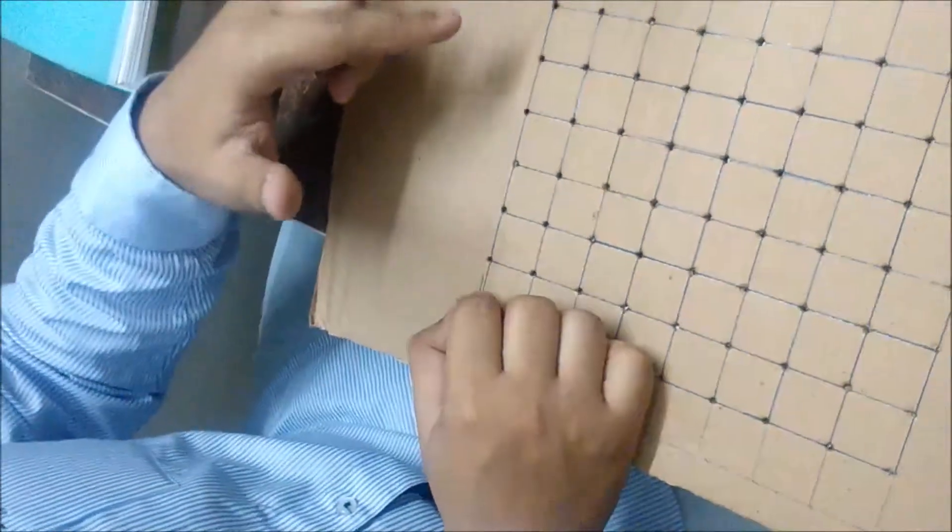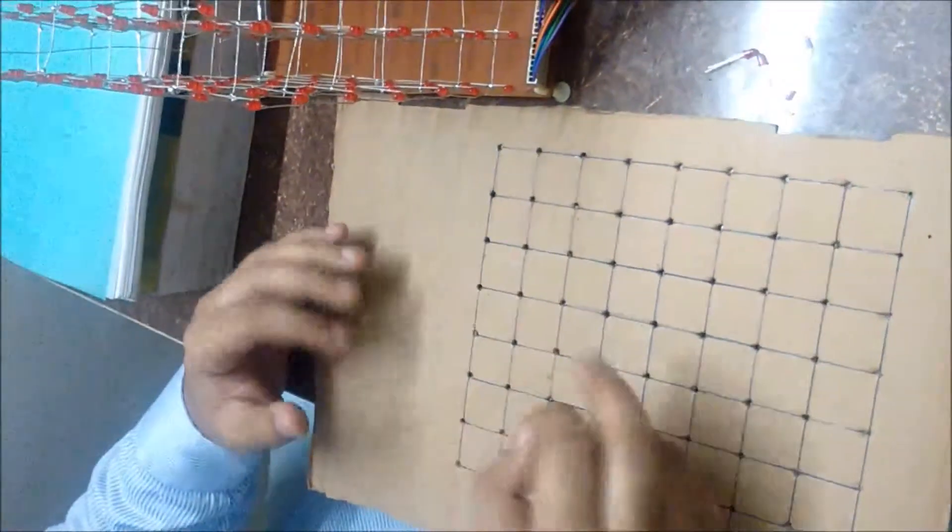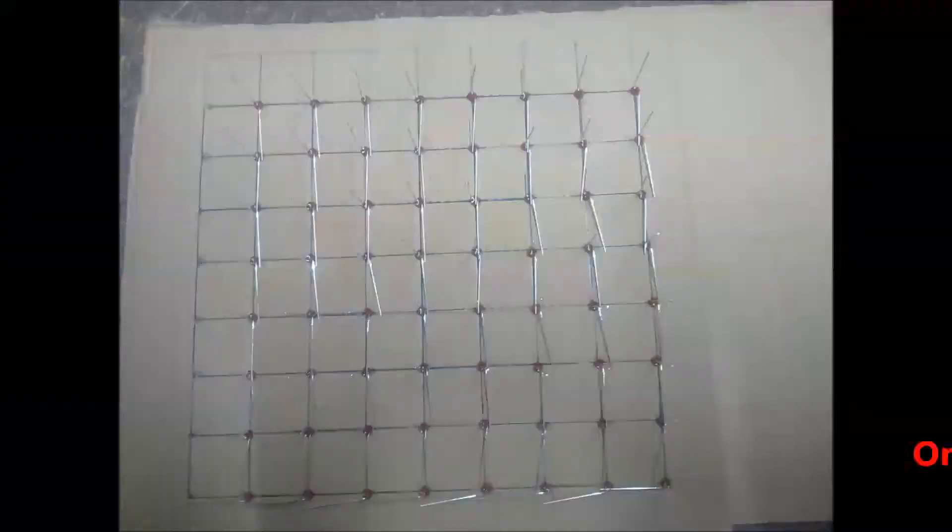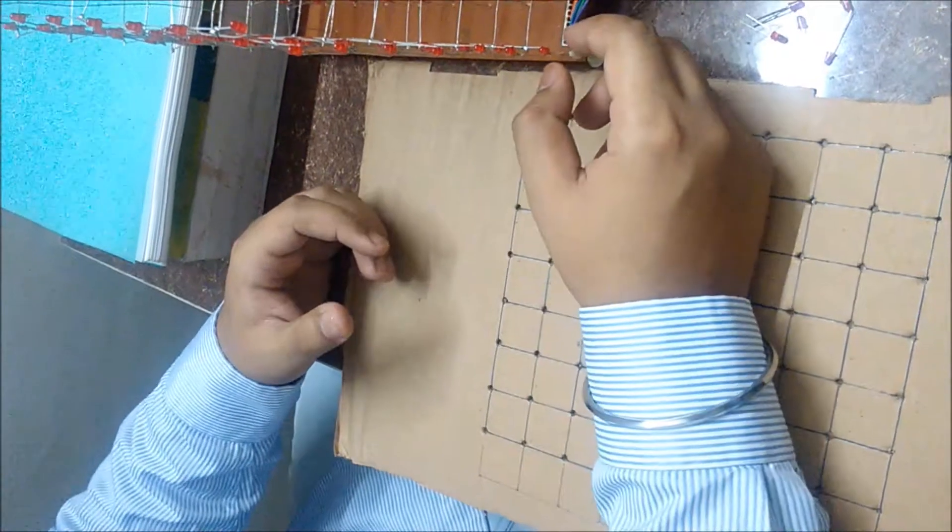Solder all the legs together. By soldering all the legs, you will have one panel of your LED cube, which contains 64 LEDs.